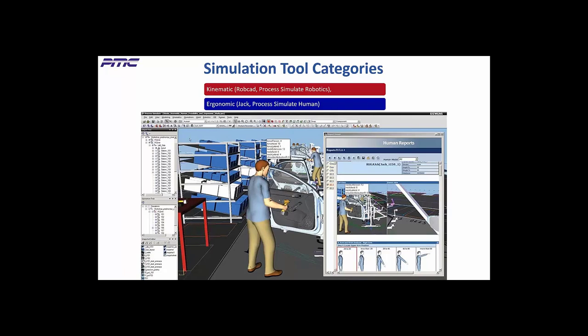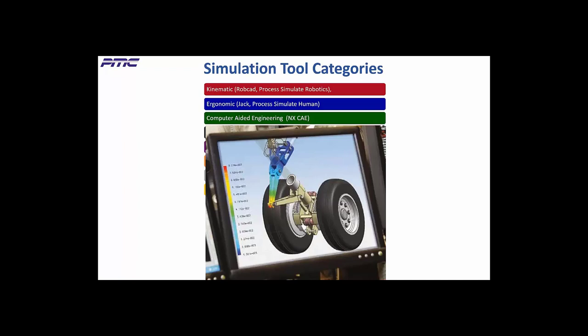Ergonomic tools like Jack and Process Simulate Human let you analyze human motion and optimize the ergonomics of human operation to enhance worker efficiency and minimize injuries. The focus here is on the actual motions that a worker makes to complete a task, so the benefits include a healthier, happier workforce, as well as reduced costs of workers on disability leave. Computer-aided engineering tools like NXCAE let you analyze specialized items like thermal and flow analysis and finite element analysis early in the design process, resulting in better performing, higher quality products.